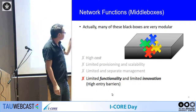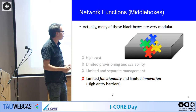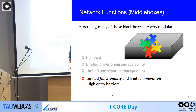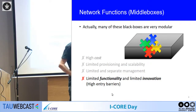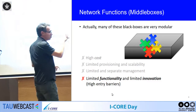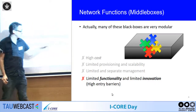This lack of modularity leads to limited functionality and limited innovation. If you want to implement a network function from scratch you need to write all these components together. The open network automation platform also advocates for using this modularity in network functions in order to facilitate innovation.